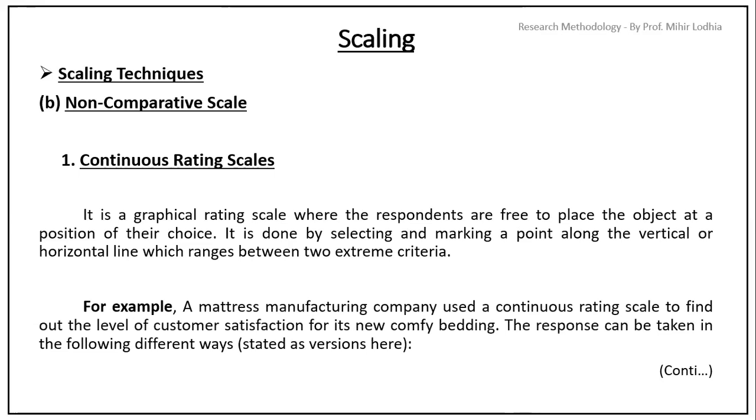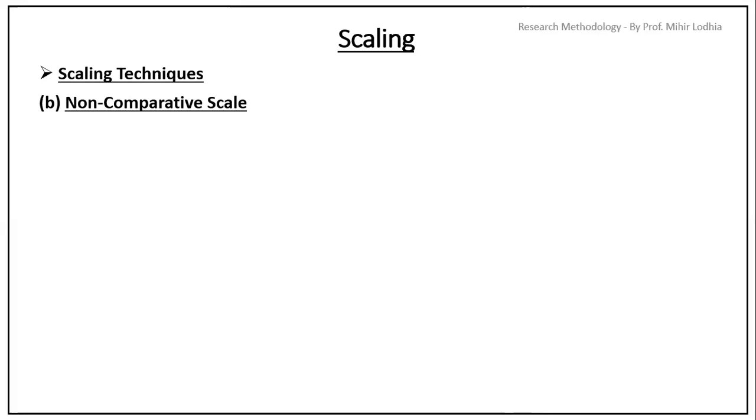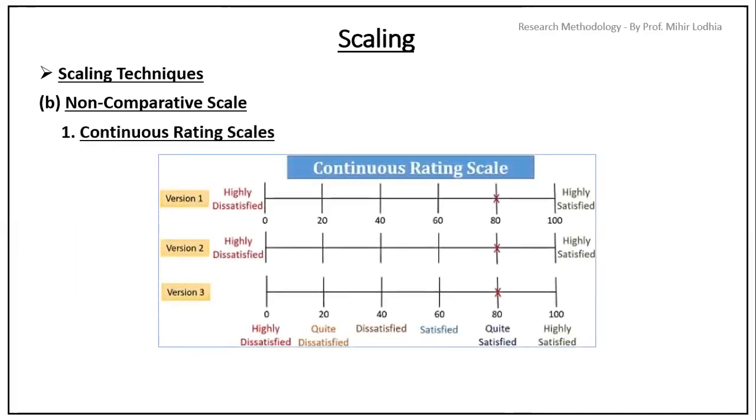For example, a mattress manufacturing company used a continuous rating scale to find out the level of customer satisfaction of its new comfy bedding. The response can be taken in the following different ways. As per the different versions, we can see the chart. You can see the chart on your screen. The three versions are there. Version one, two and three. All three versions from left-hand side highly dissatisfied to right-hand side extremely satisfied.